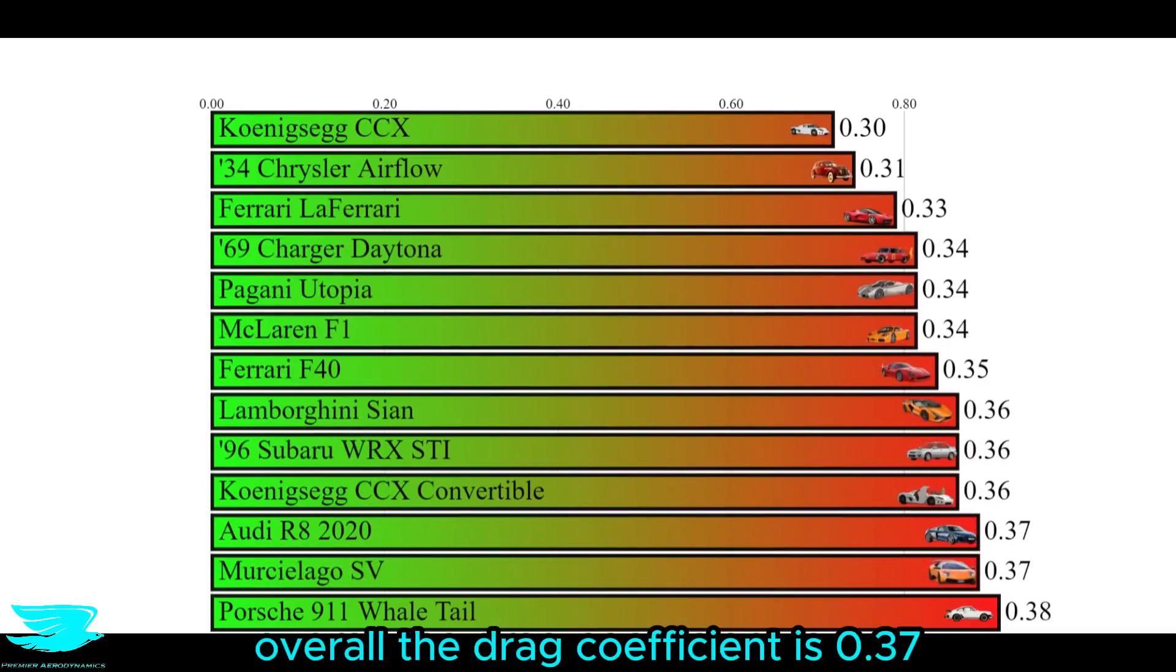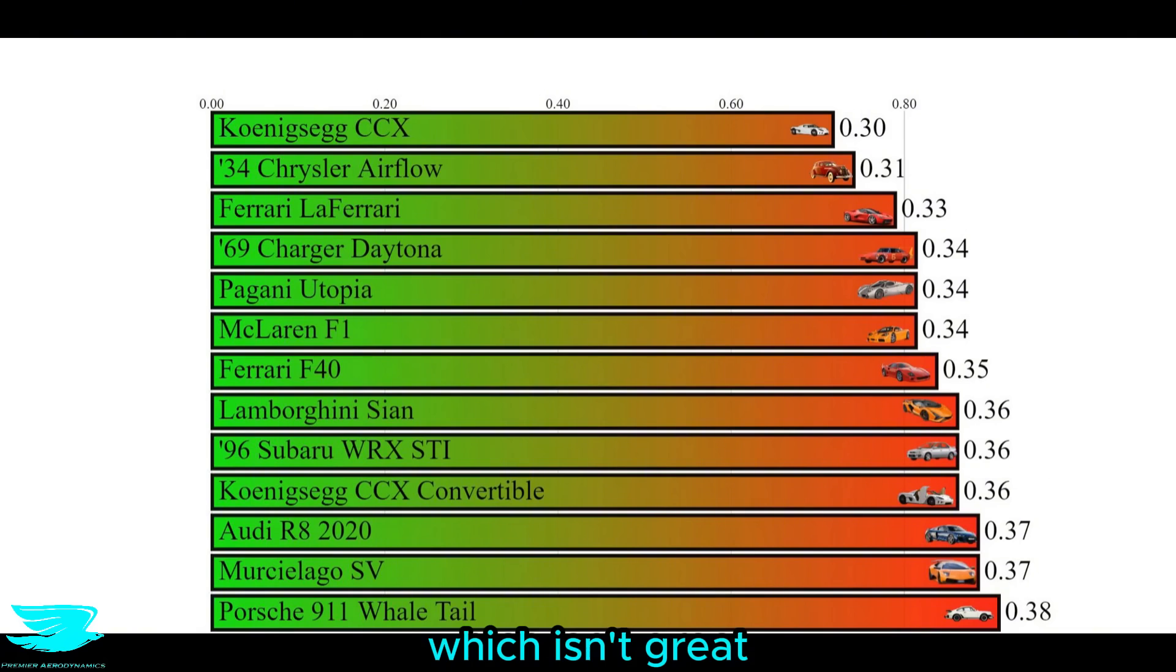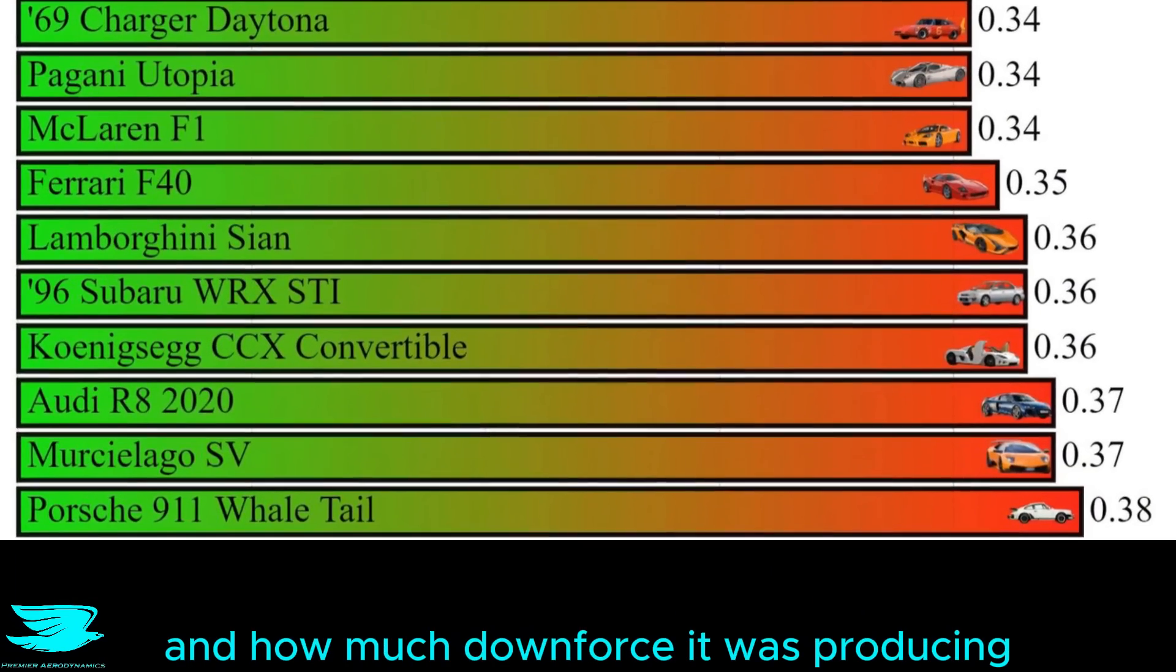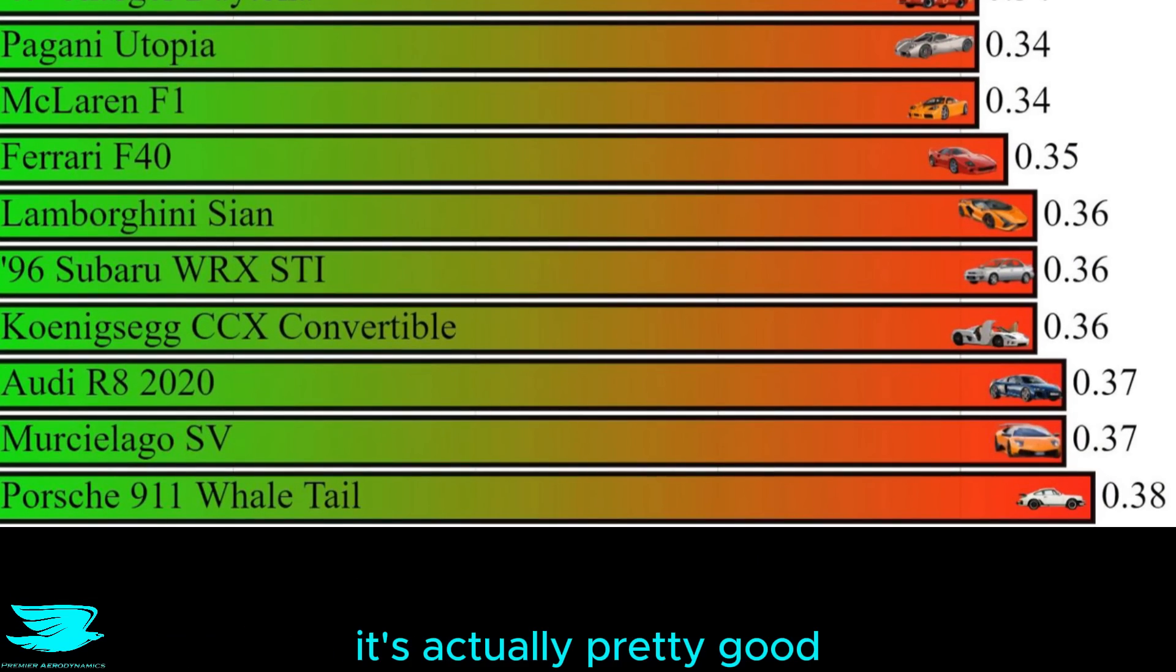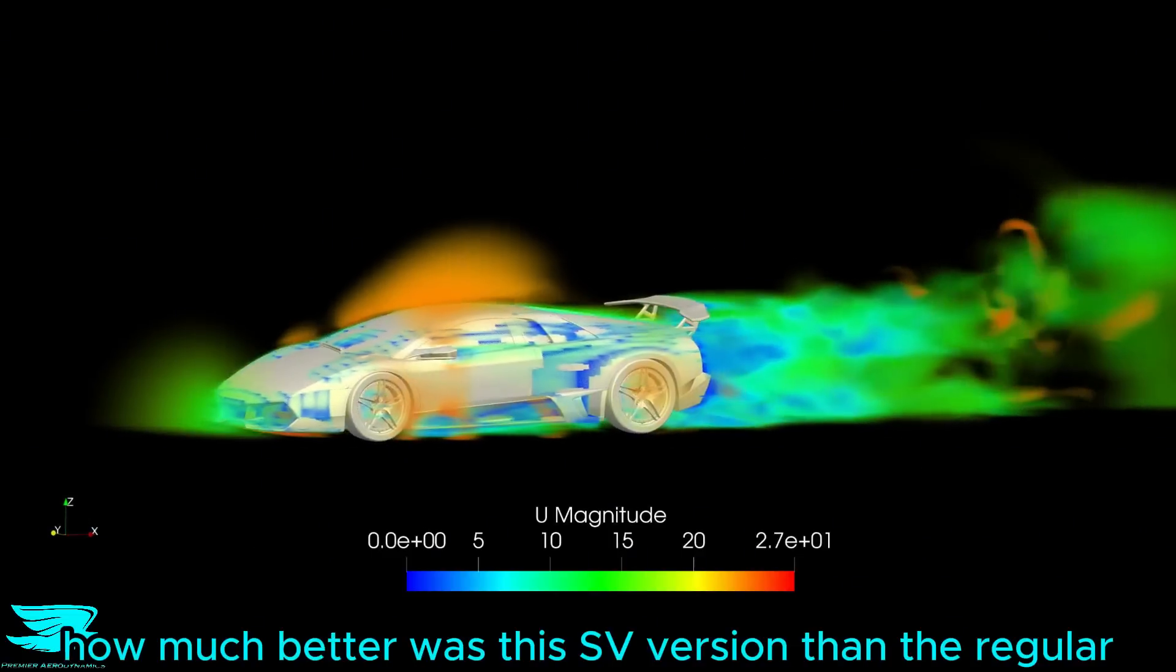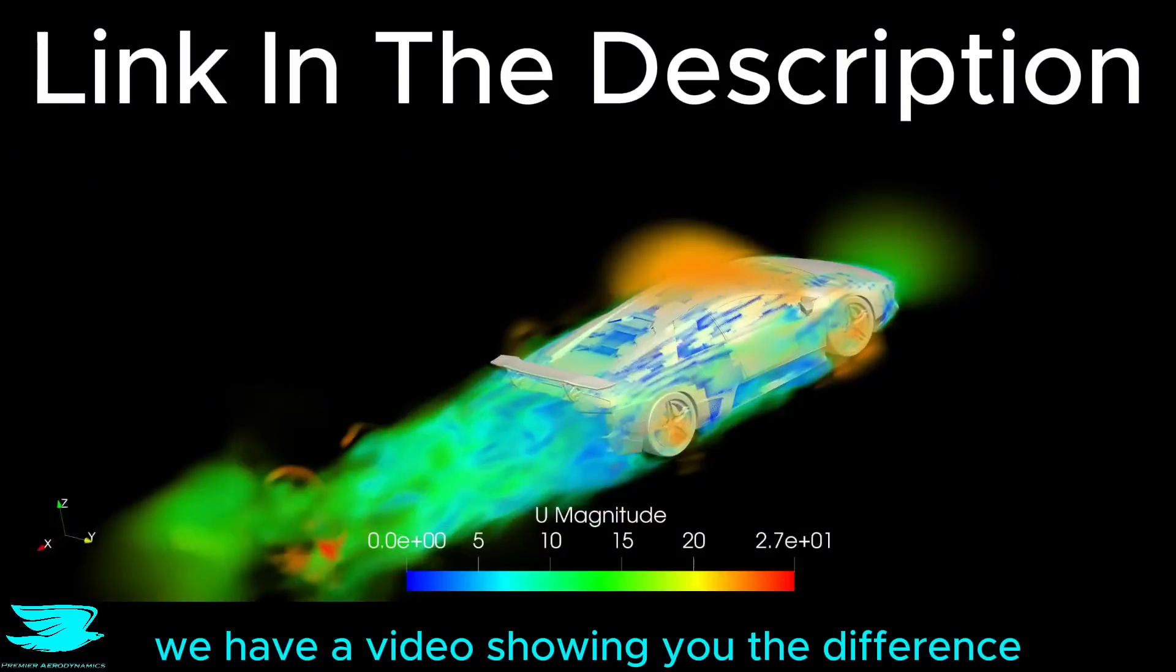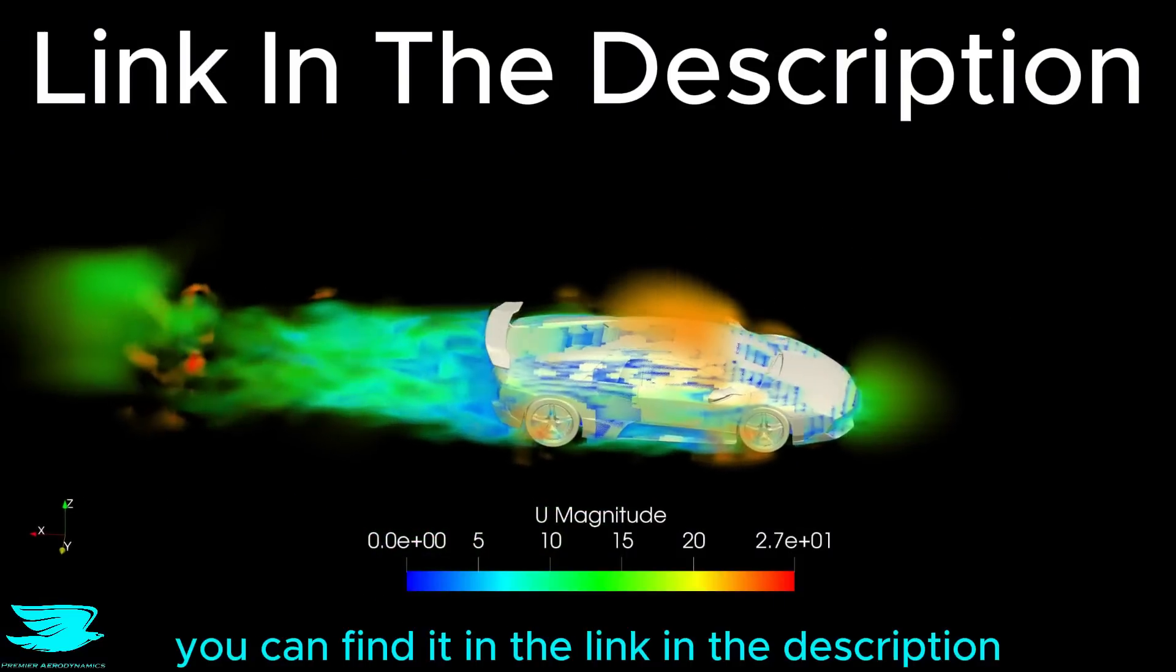Overall, the drag coefficient is 0.37, which isn't great, but considering just how aggressive this setup was and how much downforce it was producing, it is actually pretty good. How much better was this SV version than the regular baseline Murciélago? On our Patreon, we have a video showing you the difference. You can find it in the link in the description.